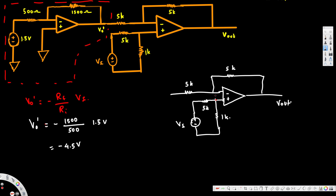We can calculate the V-plus voltage because we have a 1k and a 5k resistor along with the voltage source. We use voltage division: V-plus equals 1k divided by (1k + 5k), which is 1k over 6k, multiplied by Vs. So V-plus equals (1/6) Vs.